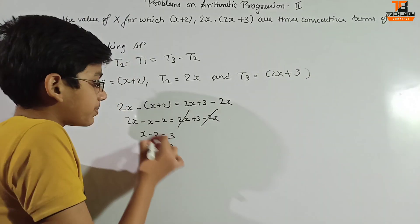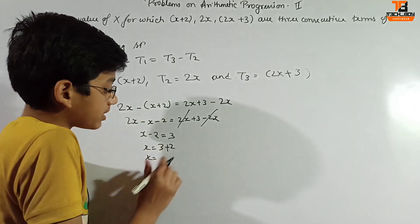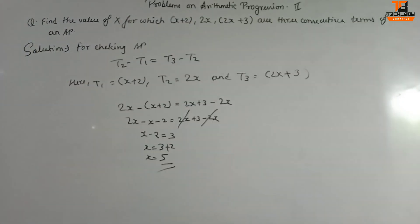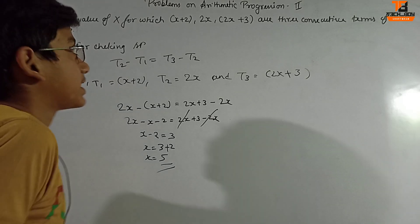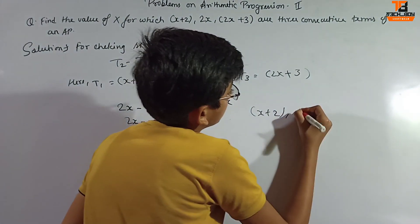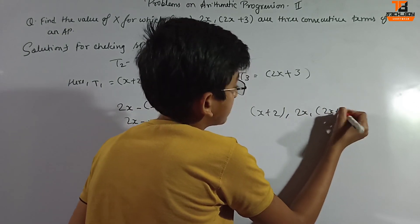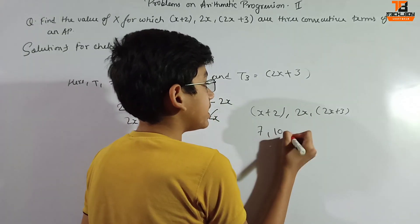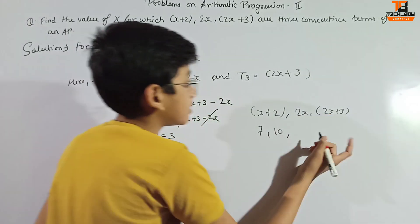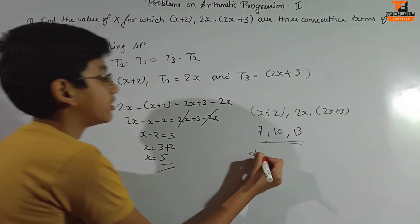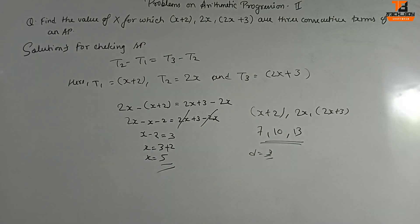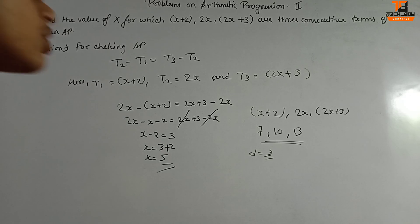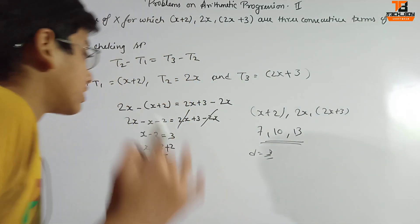Correction: it will be plus here, so x equals 5. Now checking: putting x=5 into x+2, 2x, and 2x+3 gives 7, 10, and 13. The common difference d equals 3, confirming this is an AP. That's our first question, done successfully.